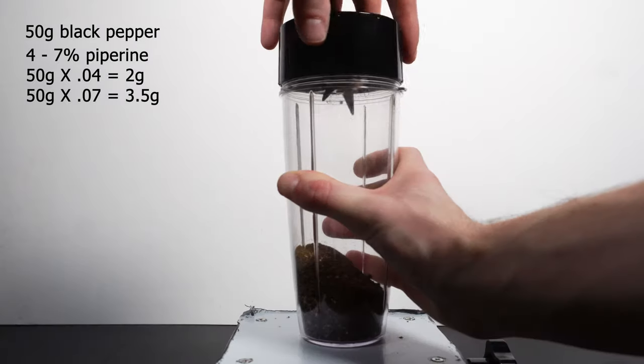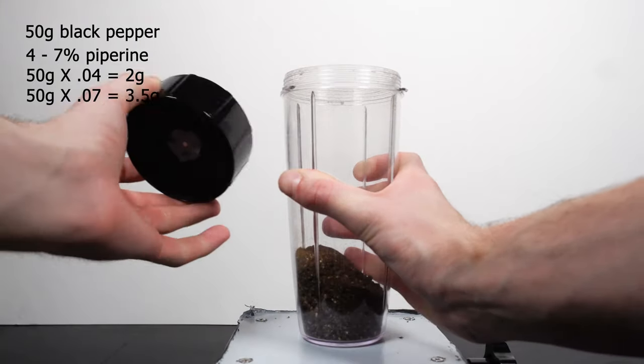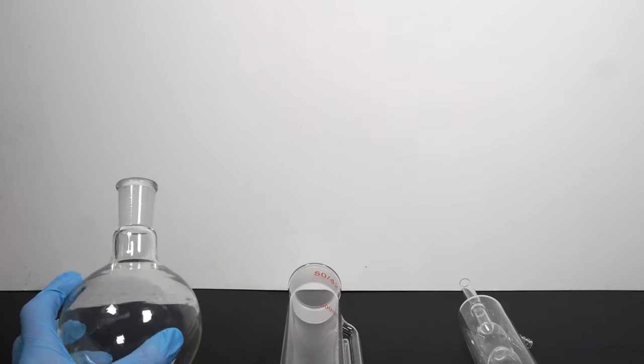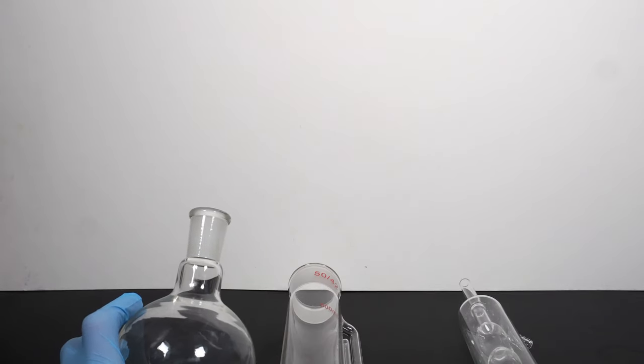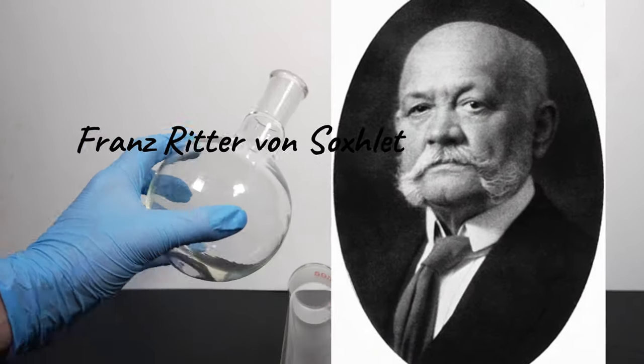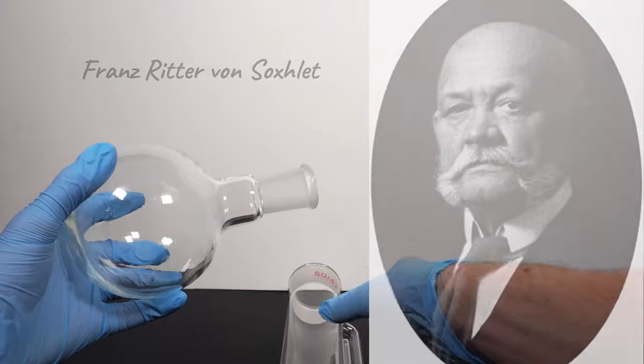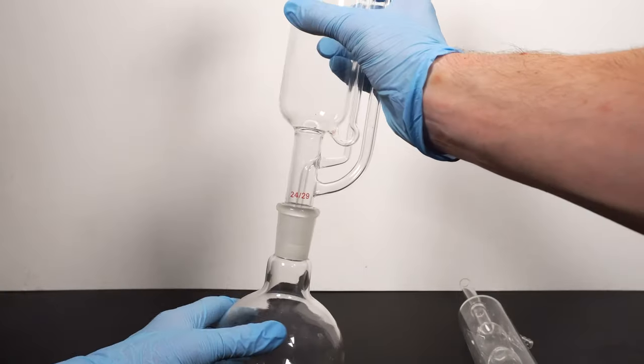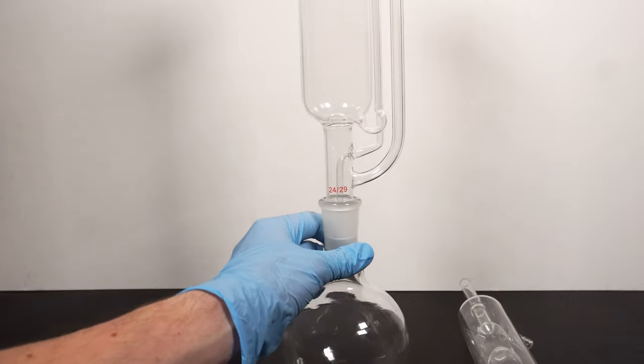Once everything has been ground to a nice size, I will go ahead and explain the piece of glassware I'm using for this project. It's called a Soxhlet extractor, and it was made by a German chemist named Franz Ritter von Soxhlet. He created this piece of equipment to originally help separate milk from fats, though since then it has been a way to speed up a hot solvent extraction.